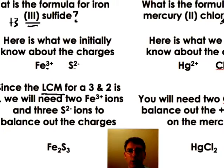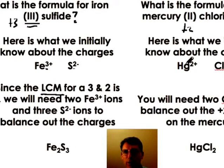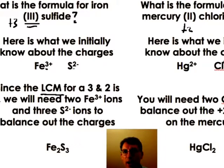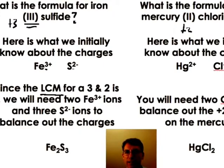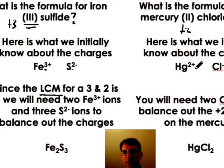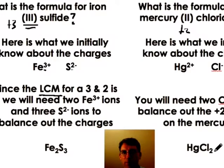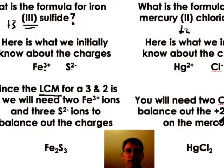With the mercury 2 chloride, we know initially that mercury is going to take a plus 2 charge. That's what the mercury 2 stands for. And chloride is going to take a minus 1 charge. So you can pretty easily see that you're going to need two chlorine ions, chloride ions, and one mercury 2 ion. And those things will balance out to give you HgCl2.